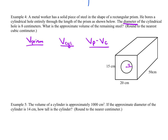Starting with the prism, the area of the base is 15 times 20, which is 300. The height is the distance between the two bases, which is 50. So the volume of the prism is 300 times 50, giving a volume of 15,000 centimeters cubed.